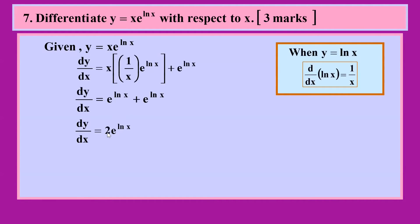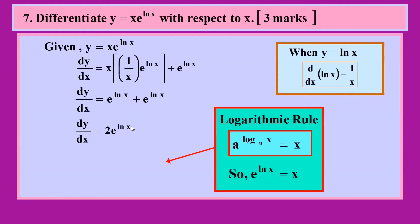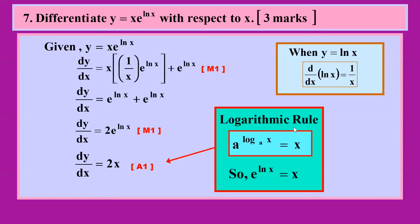Combining them gives x · 2e^(ln x). Then we apply the logarithmic property: a^(log_a x) = x. Since ln is log base e, e^(ln x) = x. So the final answer simplifies to just 2x. Three marks: one for applying the product rule, one for combining and simplifying, and one for applying the logarithmic rule.